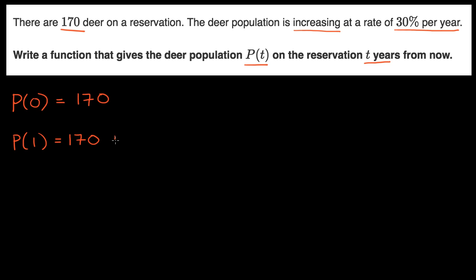But it increases at a rate of 30% per year. So it's going to be 170 plus another 30% of 170. So I could write that as 30% times 170. Or I could write this as 170 plus 0.3 times 170.